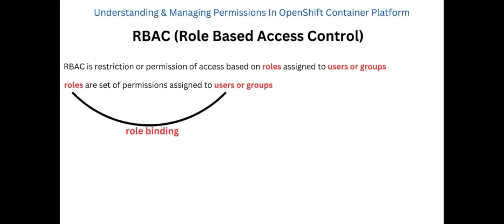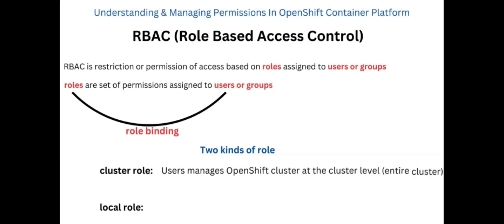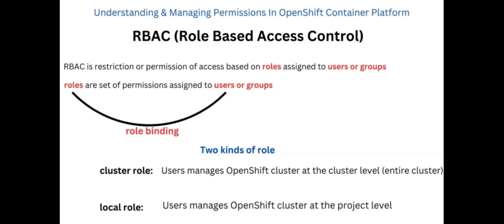In OpenShift, there are basically two kinds of roles: the cluster role and the local role. The cluster role allows users or groups to manage the OpenShift cluster at the cluster level — it cuts across the entire cluster. For the local role, users or groups with this role can manage OpenShift at a project level.